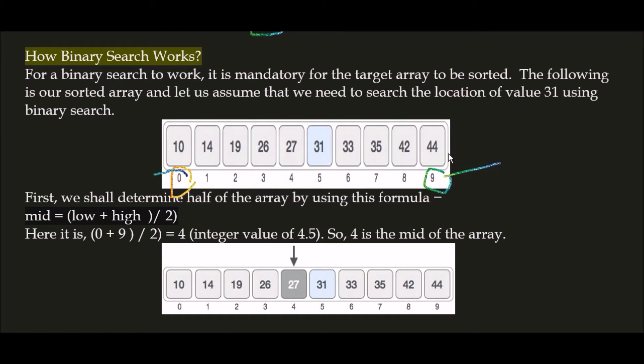Here: 10, 14, 19, 26, 27, 31, 33, 35, 42, 44. The array is sorted, which means we can apply binary search on this array. Here we take a target value of 31. This is the searching element and the target value we need to search for is 31.